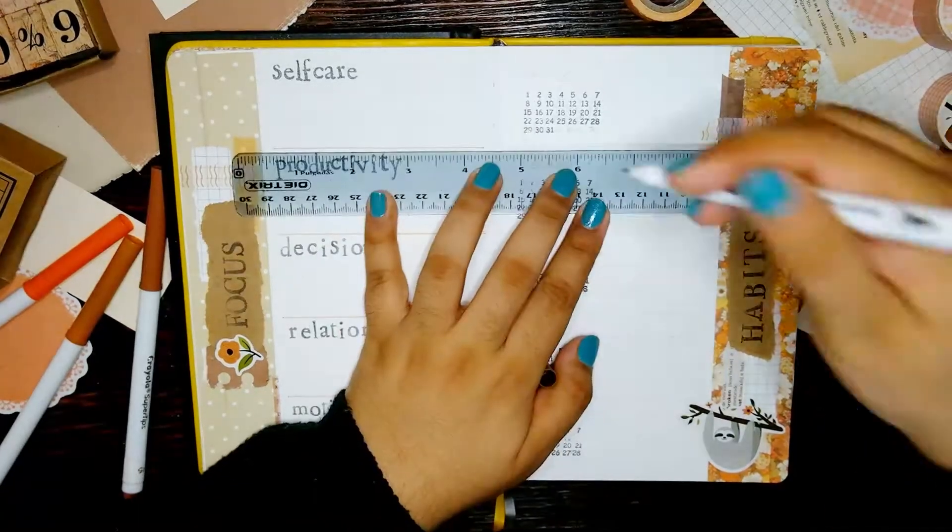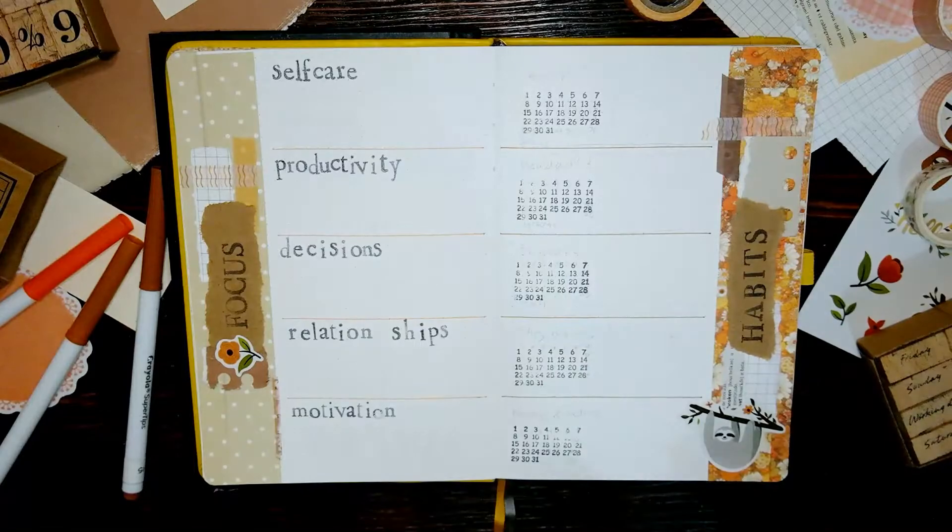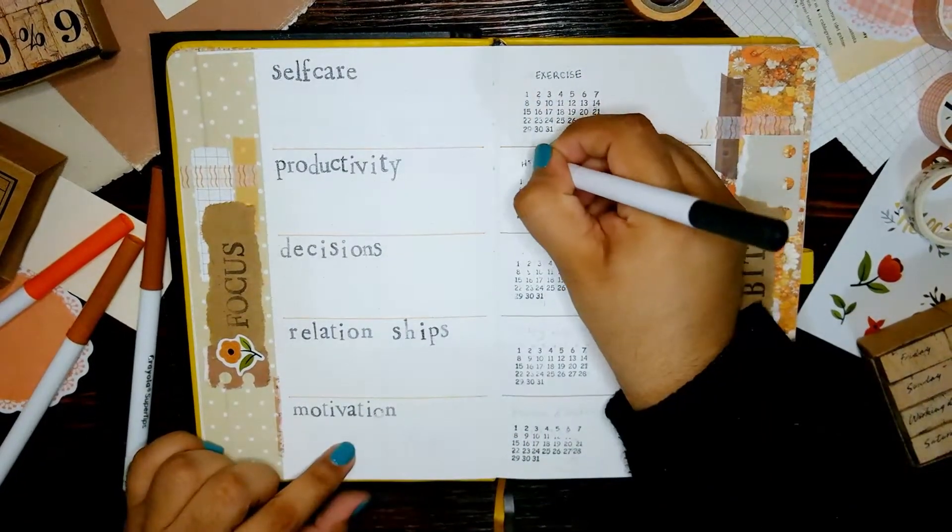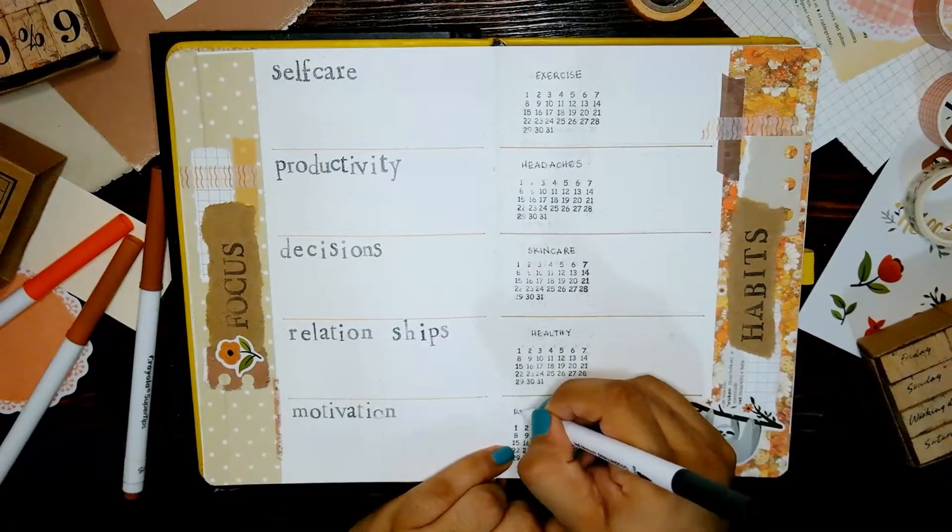Currently I'm tracking six different things: exercise, skincare routine, eating healthy, reading, posting and days when I don't have a headache. I think this goes hand in hand with the focus spread because it's a way for me to keep an eye on those areas I previously mentioned.